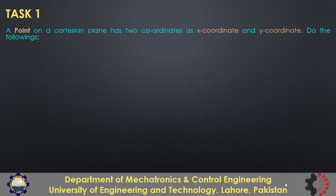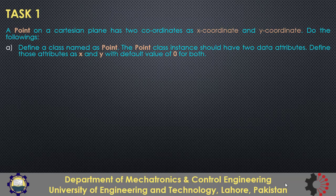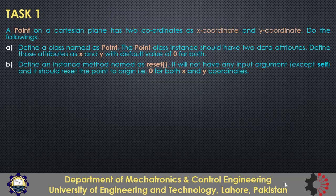This task is related to creating a class for a point on the xy plane. A point on the xy plane has two coordinates: x coordinate and y coordinate. You will create a class Point and its object should have two data attributes x and y, with their default value set to 0, so that if a point is created without providing any input arguments, both of its coordinates will be 0.